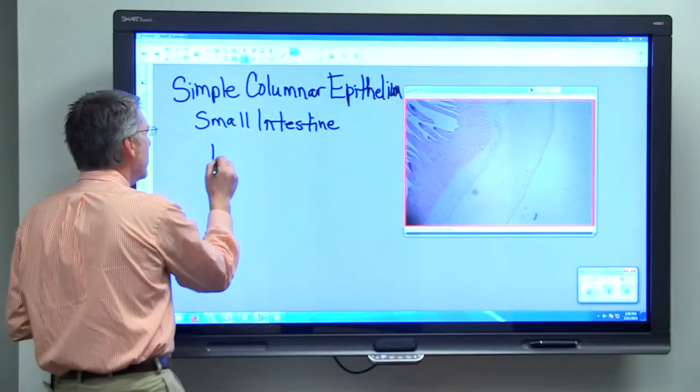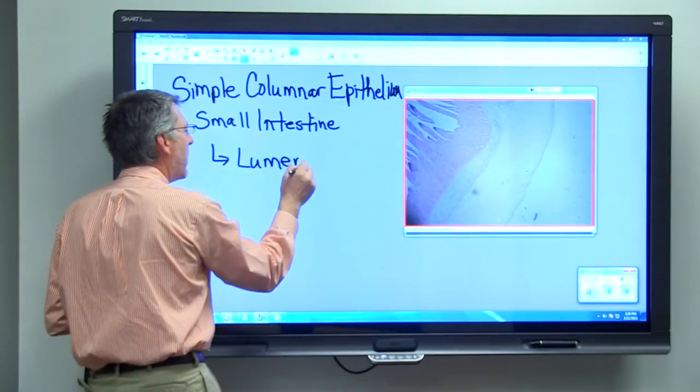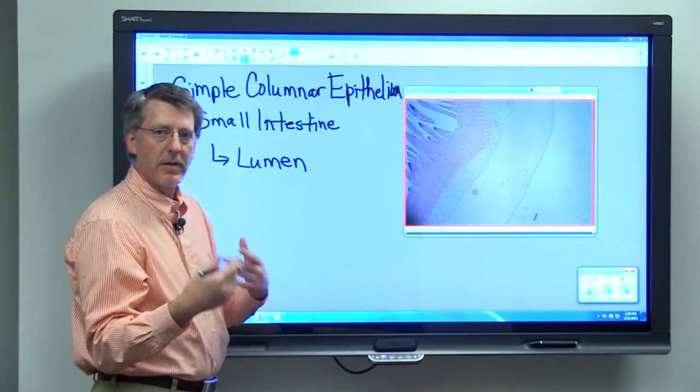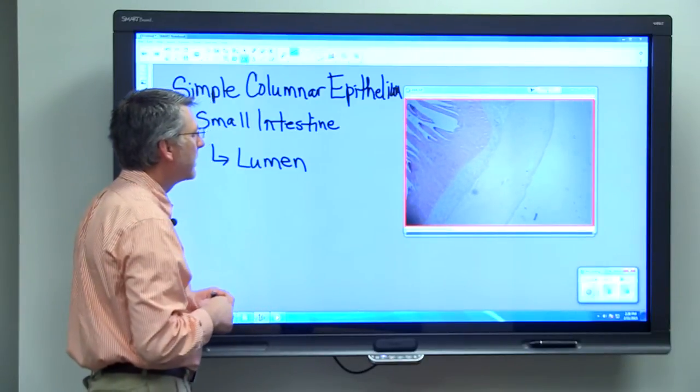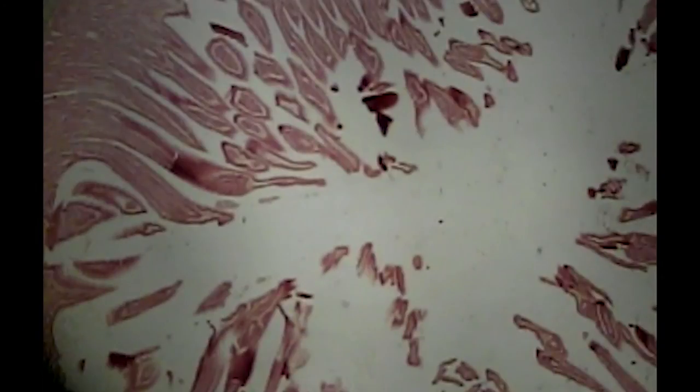The lumen of the small intestine is what the food actually moves through. The lumen is the hollow space inside the intestine. There are a lot of little finger-like structures that project into the intestine, and you'll learn about those when you cover the digestive system.